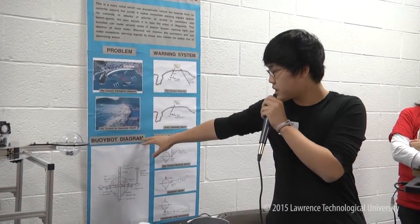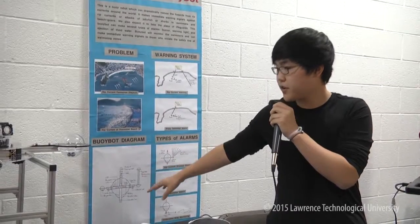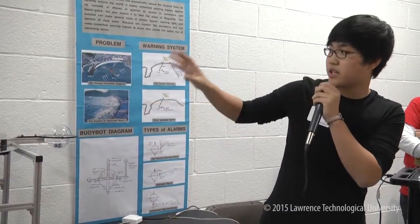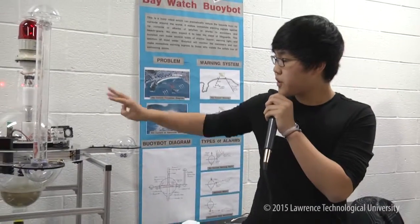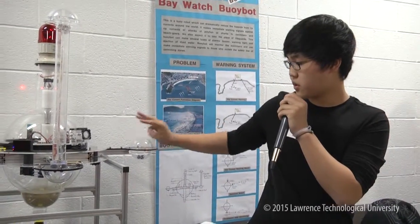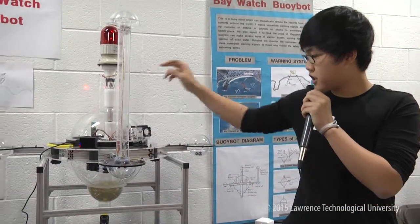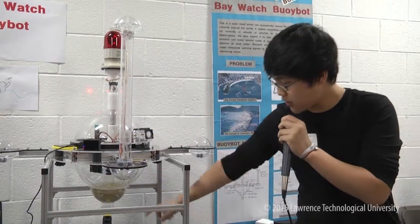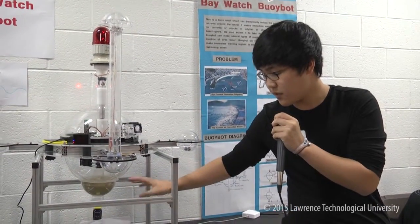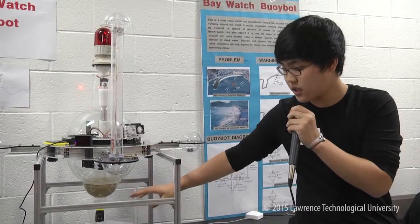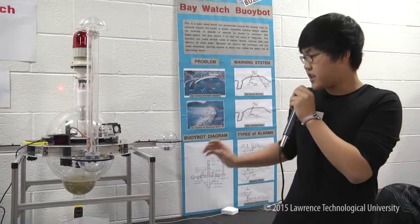This is a Boybot diagram that we drew — it's a side view of our robot. There are three main ways the robot identifies danger: the laser, the camera, and the underwater camera. The underwater camera recognizes shark and jellyfish attacks.